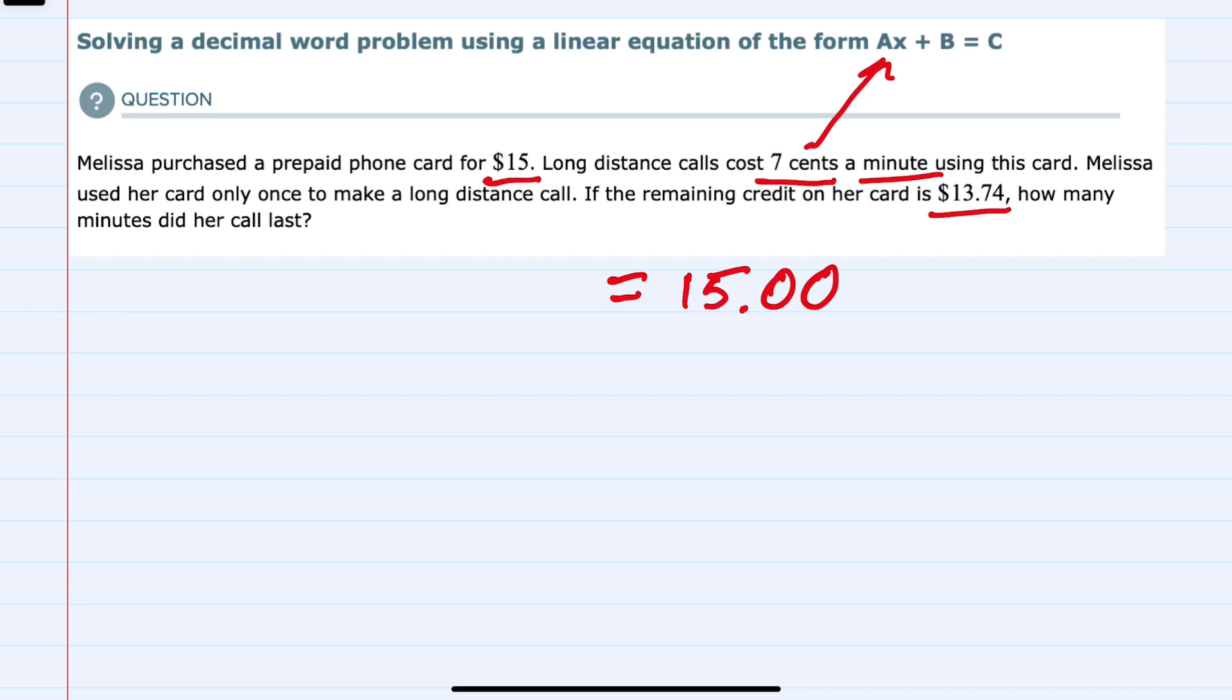Seven cents per minute is 0.07 times x, where x is the number of minutes that she spent on the phone.